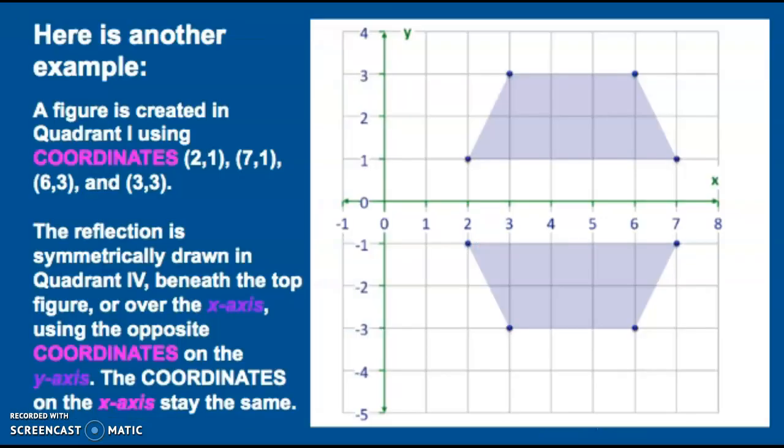Here is another example, although it is reflected downward over the x-axis instead of across the y-axis. A figure is created in quadrant 1, using coordinates (2,1), (7,1), (6,3), and (3,3).